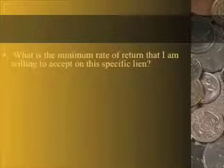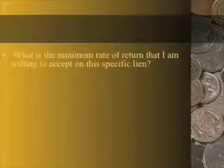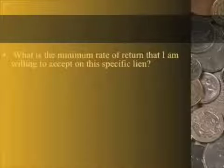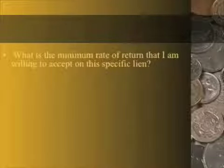You need to go into these auctions prepared, knowing exactly what the minimum rate of return is that you're willing to accept on a specific lien. You also need to know what your rate of return is based on your maximum bid. You can't just say you're willing to accept a 14% rate of return — you need to have that math done beforehand to know exactly what your maximum bid would be in order to achieve the rate of return you're targeting.